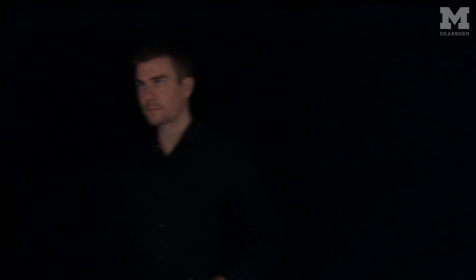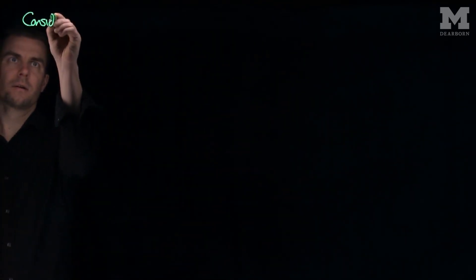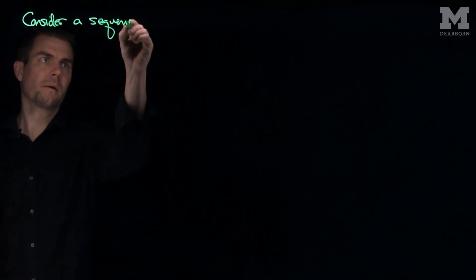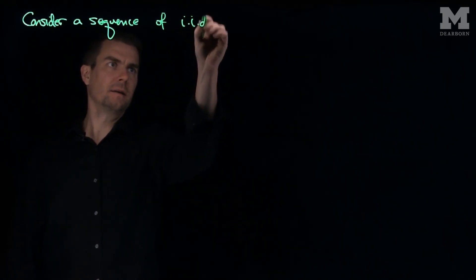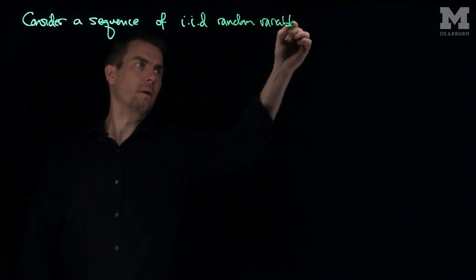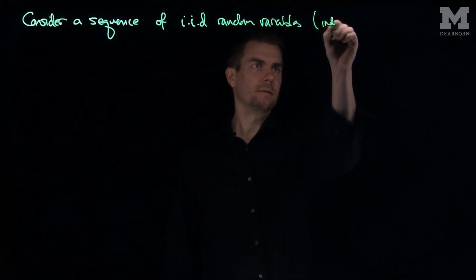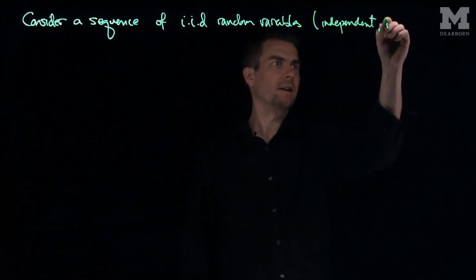Hello students. In this video we'll discuss several estimates for sums of random variables. Let's consider a sequence of IID random variables. IID, of course, means independent - these random variables are independent and identically distributed.